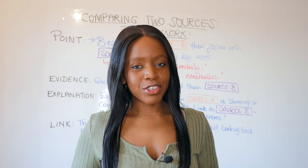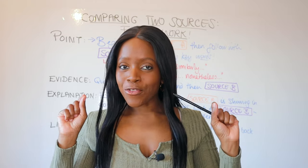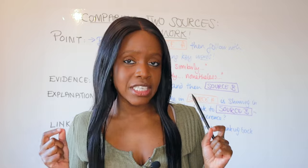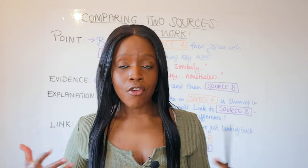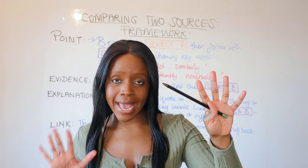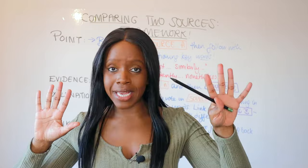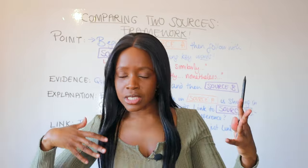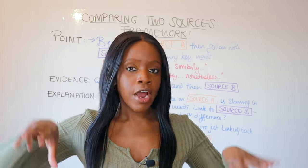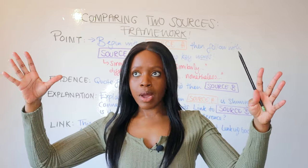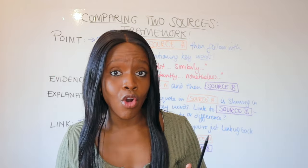Hello and welcome back to another GCSE revision video. One of the most common issues that GCSE English students face when it comes to Language Paper 2 of the GCSE exams is how to effectively compare the two sources — source A and source B — in question number two as well as question number four. Students sometimes think that comparison is writing about one source in one paragraph, then writing about another source in a different paragraph, and saying they're comparing, which is not the case.